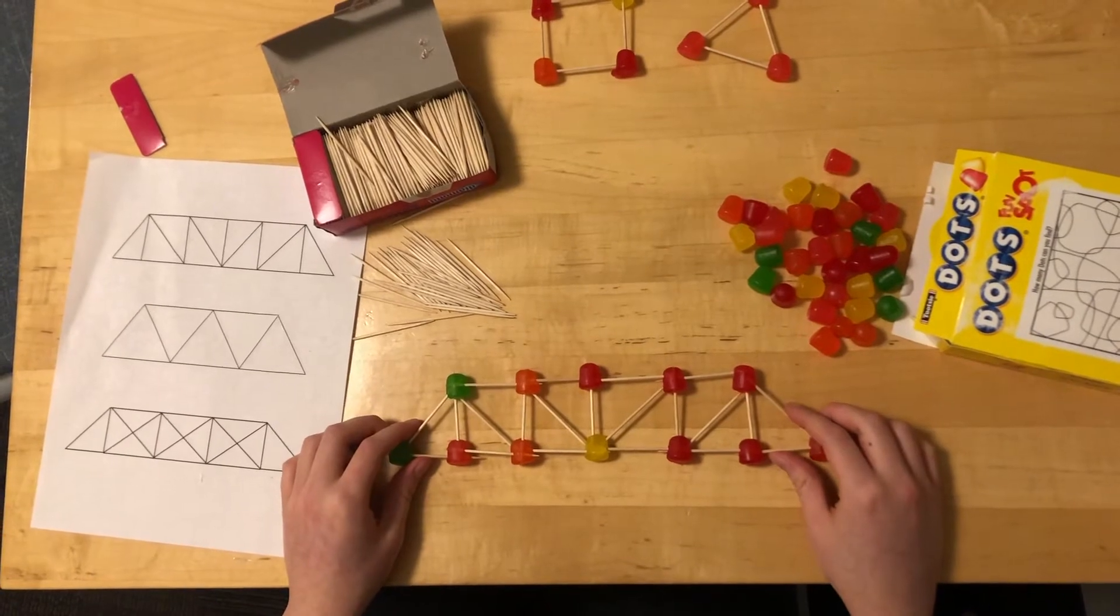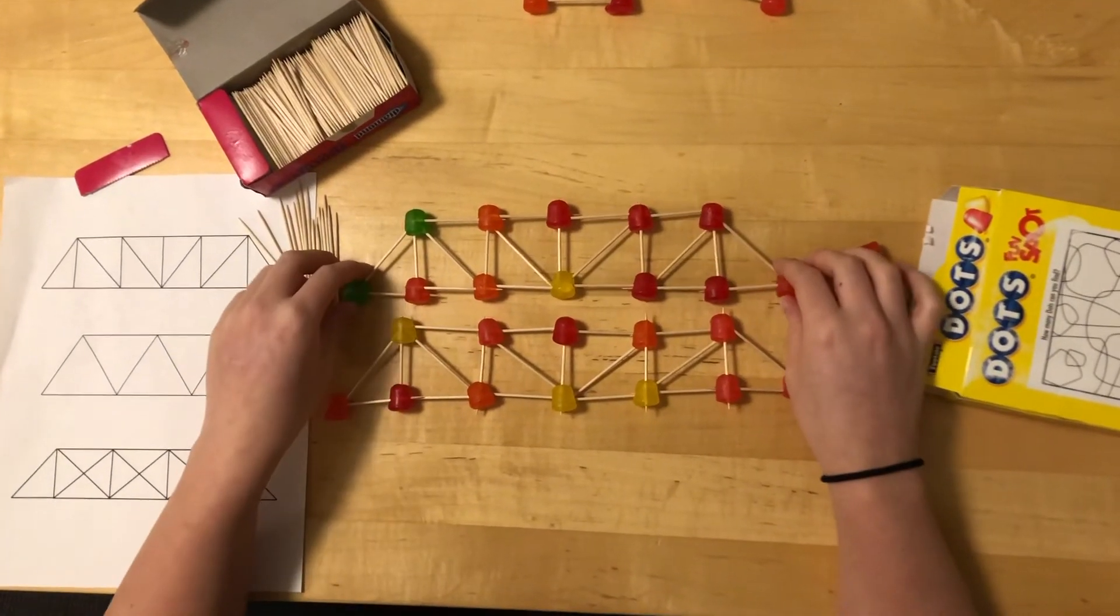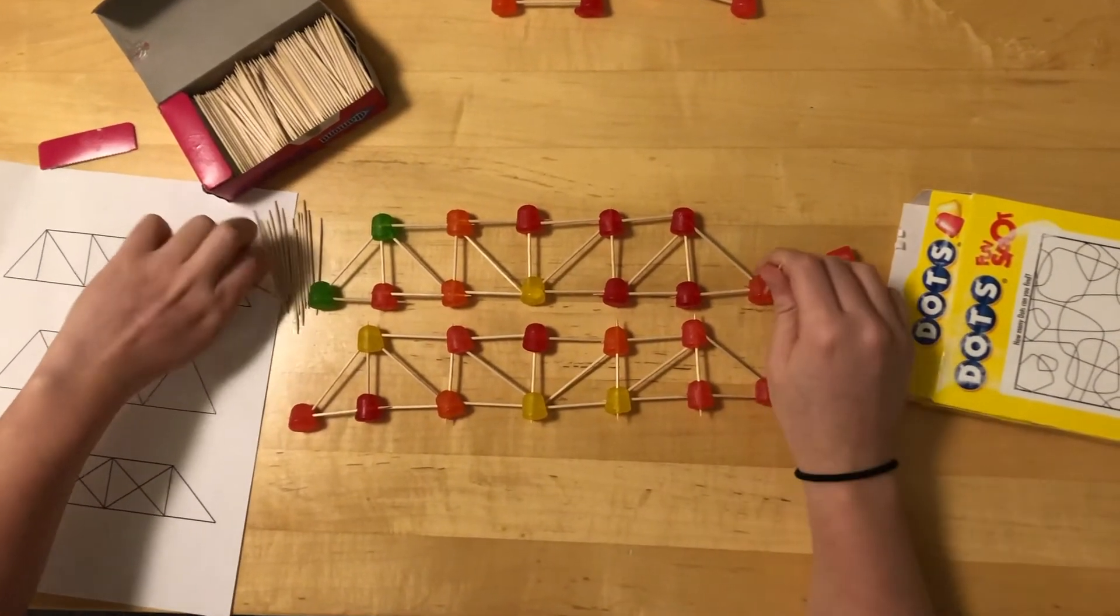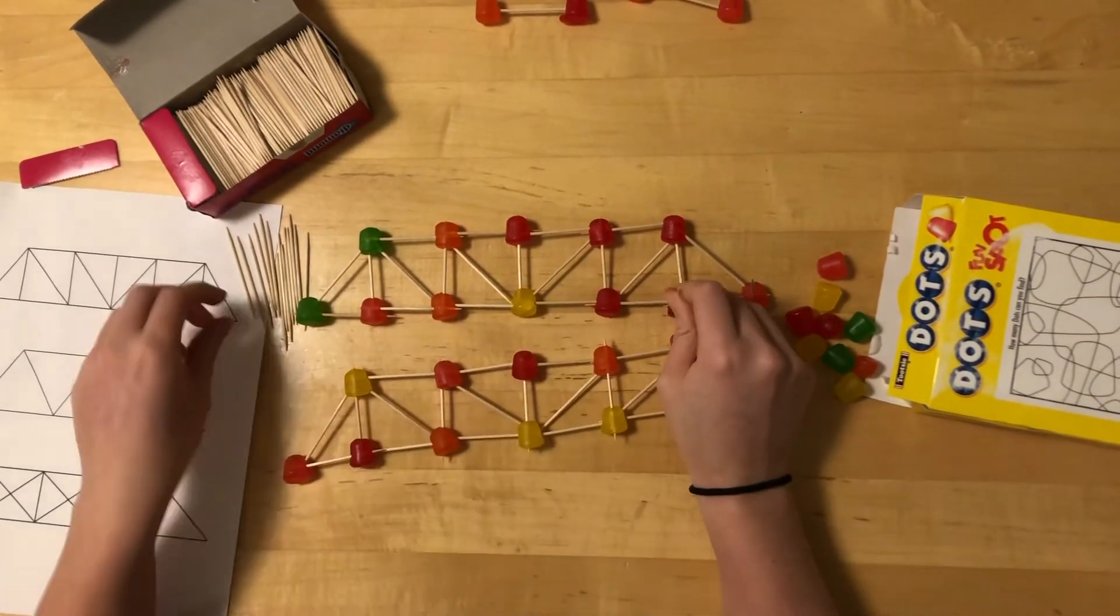So now we have one side of the bridge complete and we're going to make the other side. Now that we have the two completed sides of the bridge we're going to connect them with toothpicks. So we're going to take a toothpick and stick it out of each gumdrop on the bottom of one side of the bridge.